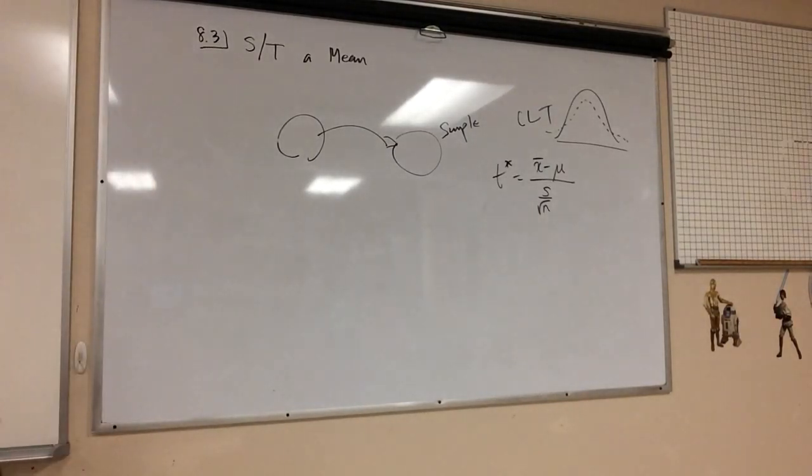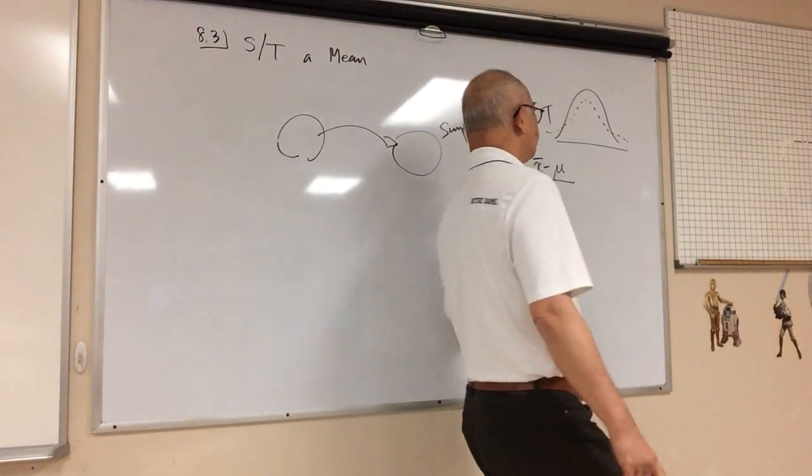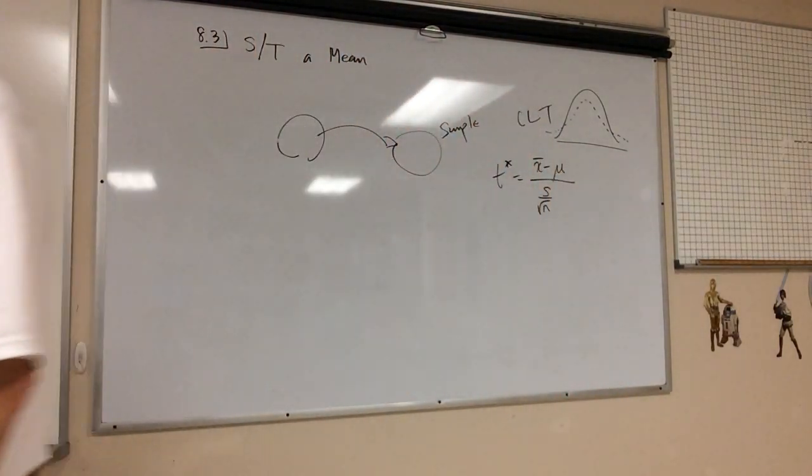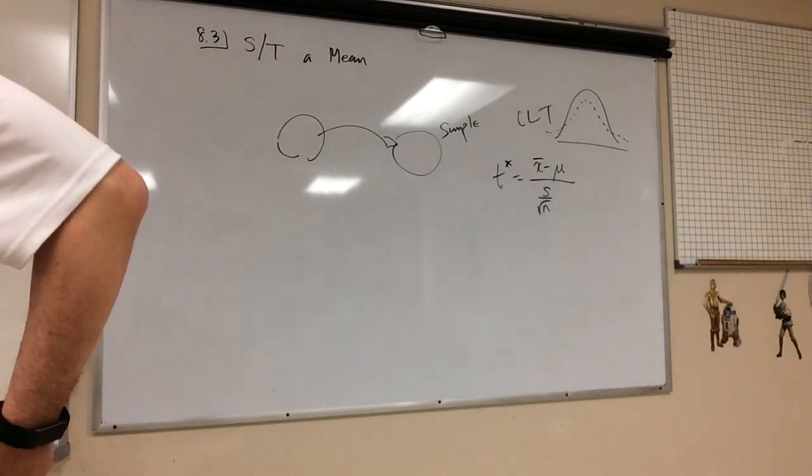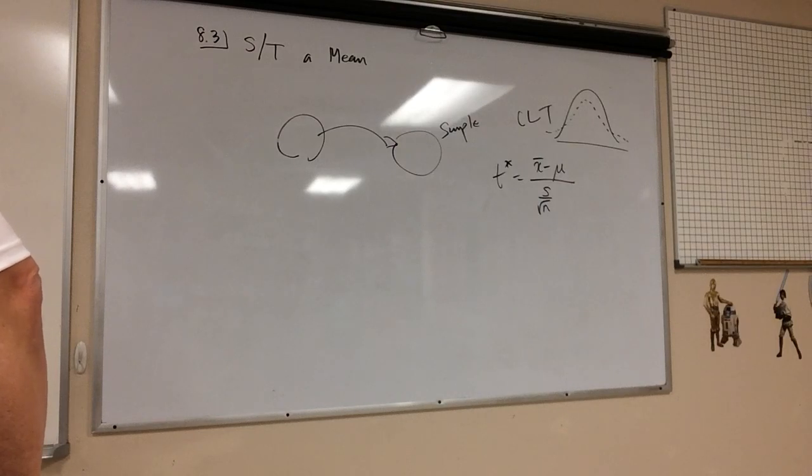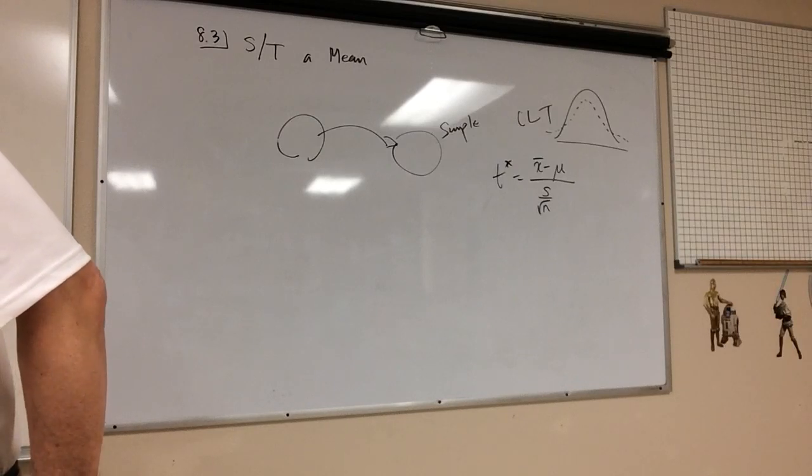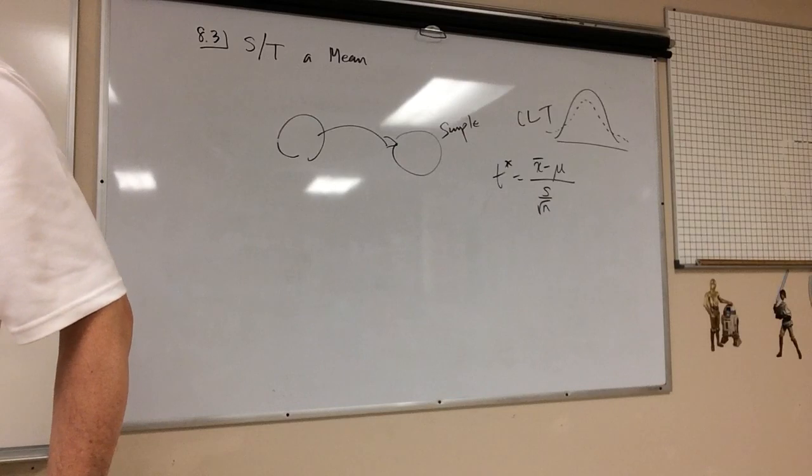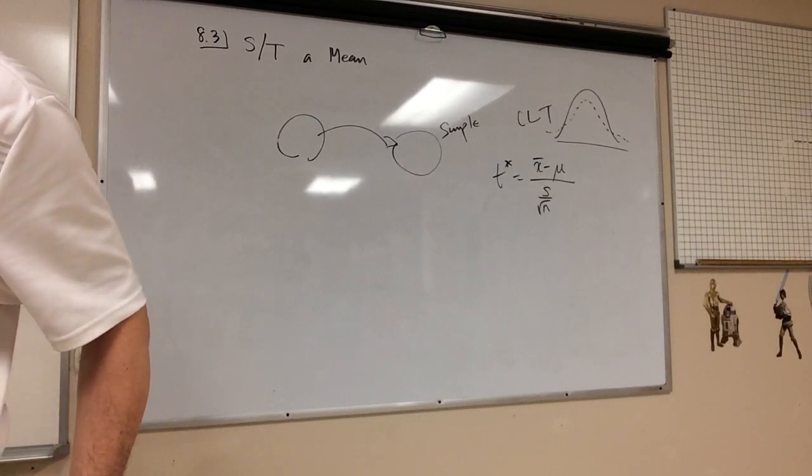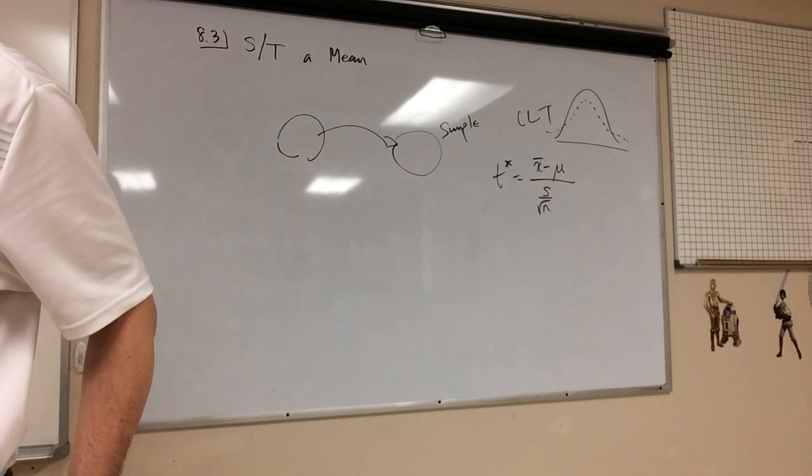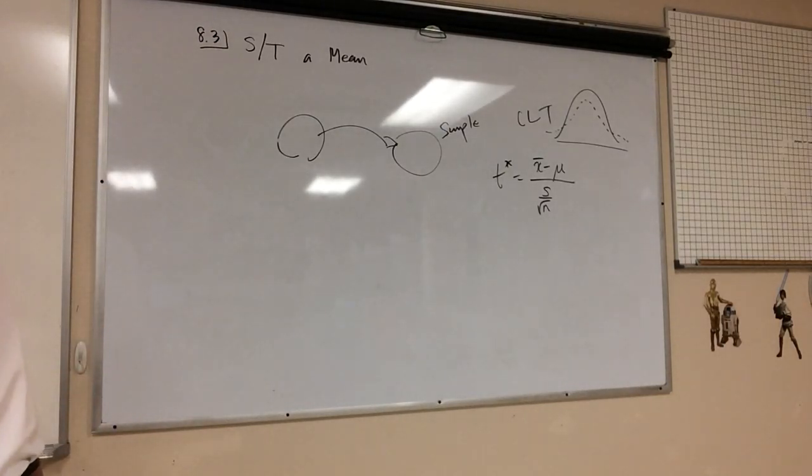So let's see if you can do the p-value method using this. Example number one, the author obtained the times of sleep for randomly selected adult subjects included in the National Health and Nutrition Examination Study and those times in hours are there. So it's sample size of 12, and if you run the numbers, you get, where do you get these numbers from? You just populate them in L1 and do a one-var stats, right, you would get an x-bar of 6.83 and an s of 1.99.